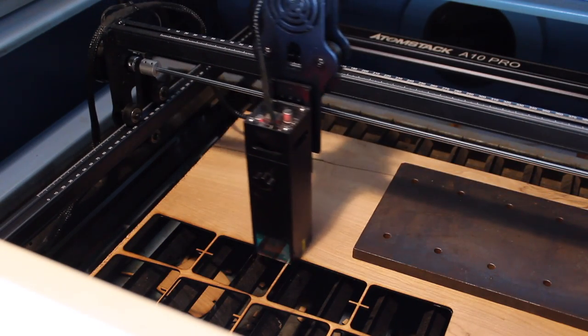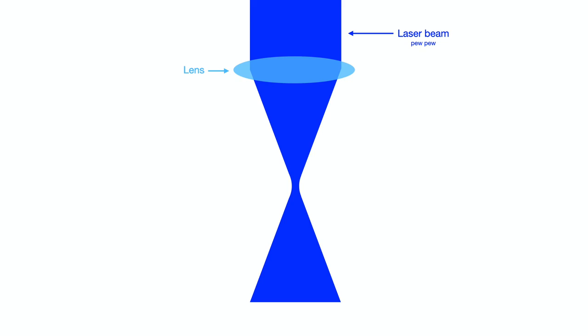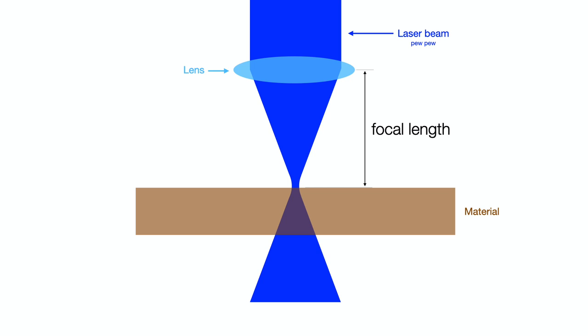Before we fix that problem, I'll just take a minute to describe why this height adjustment works. We have a laser beam that's going through a lens, which is characterized by a certain focal length. To do detailed engraving, it makes sense to adjust the laser so that the focal point hits the top surface of the material. This concentrates the laser power onto the smallest possible area.